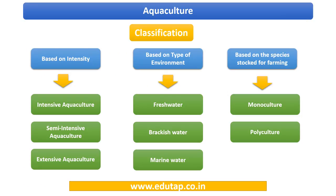Now we come to the classification of aquaculture. Based on intensity, it is classified into intensive, semi-intensive, and extensive. We shall be dealing with a tabular column further that will give us an idea regarding these types of cultures. Then based on the salinity of water, it is classified as freshwater, brackish, and marine.